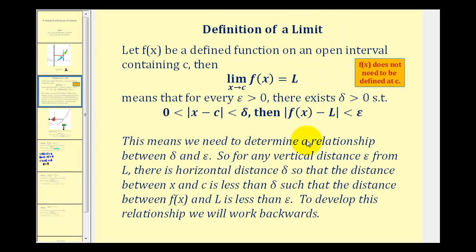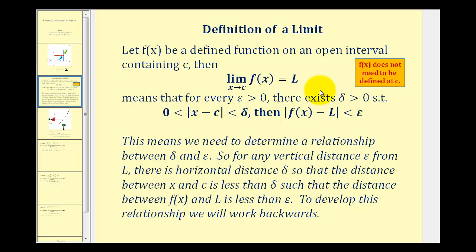Now let's take a look at the formal definition of a limit. If we let f of x be a defined function on an open interval containing c — and it doesn't need to be defined at c, as we saw from the previous graph — the limit as x approaches c of f of x equals L means that for every epsilon greater than 0 there exists a delta greater than 0 such that, and remember absolute value means distance.